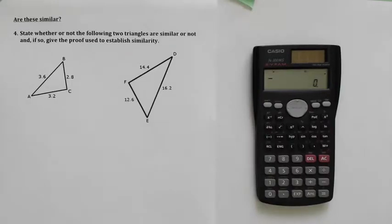We're looking at similarity number four. We want to know, are these similar? State whether or not the following two triangles are similar or not, and if so, give the proof used to establish that similarity.